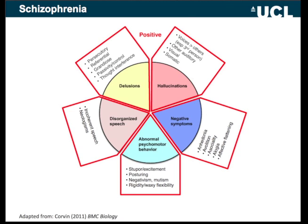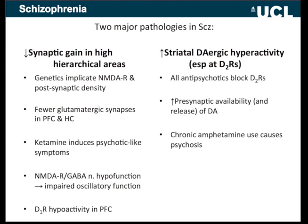There are two major neurobiological pathologies in schizophrenia. Firstly, there's a loss of synaptic gain in higher hierarchical areas of the cortex. There's a large amount of genetic evidence implicating the NMDA receptor — a specific glutamate receptor very important for the control of synaptic gain — and the post-synaptic density and signaling pathways from the NMDA receptor. In neuropathological evidence, you can see fewer glutamatergic synapses in prefrontal cortex and hippocampus — high hierarchical areas.